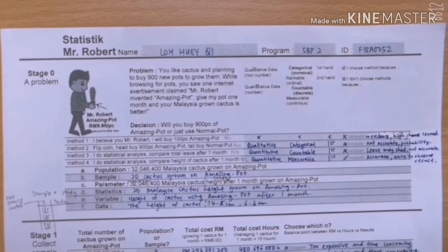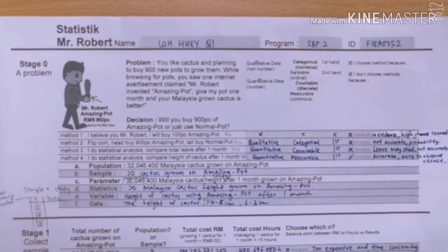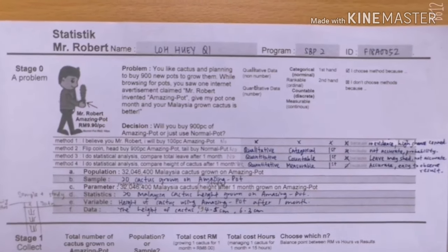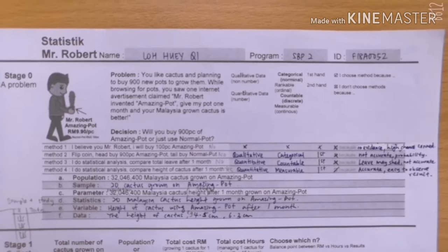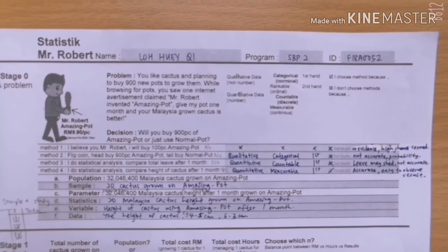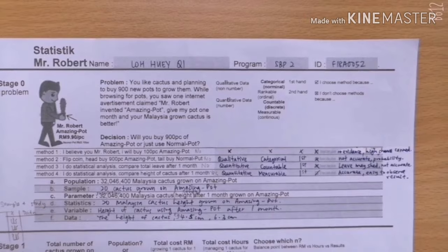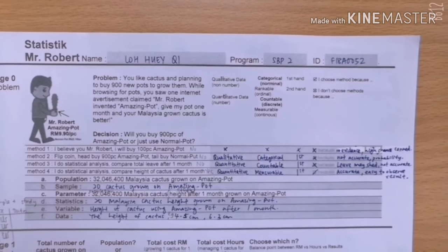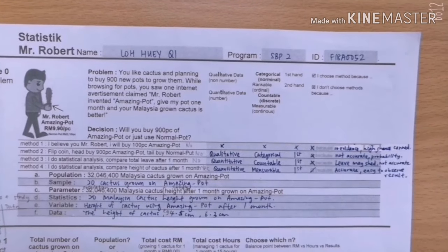So let's move on to stage zero. There are four methods. Method one is I believe in you Mr. Robert, I will buy hundred pieces of amazing pot. This method is not accurate because there's no evidence and it's a high chance to be conned.